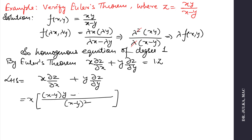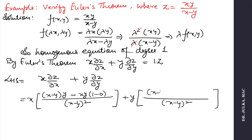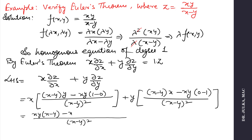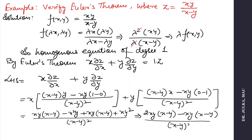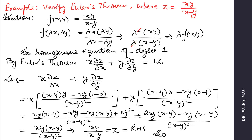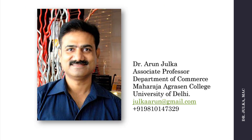Now we will verify this. Take the left-hand side: x·(∂z/∂x) + y·(∂z/∂y). We calculate ∂z/∂x multiplied by x and ∂z/∂y multiplied by y. After simplification, the numerator gives xy(x − y), and the denominator gives (x − y)². The answer is xy/(x − y), which equals z. So verified.